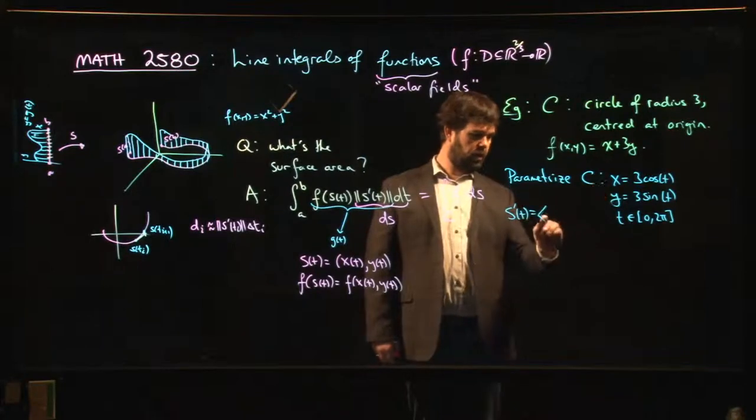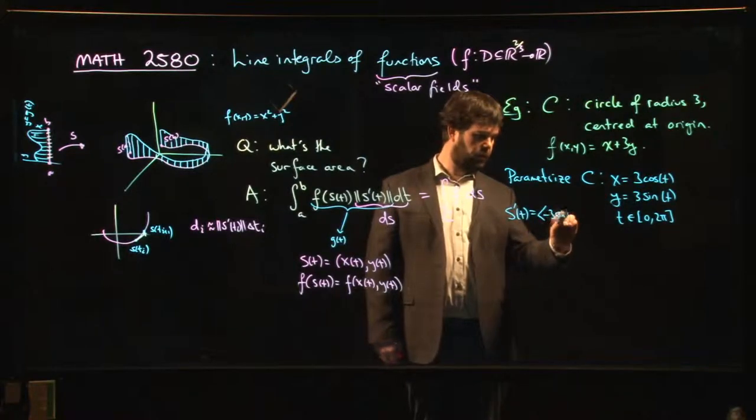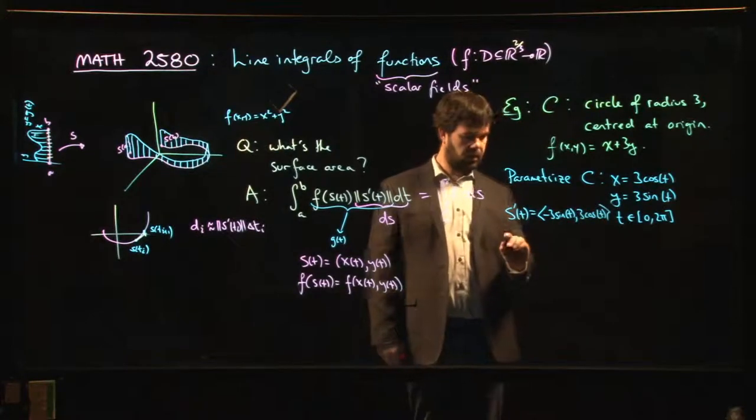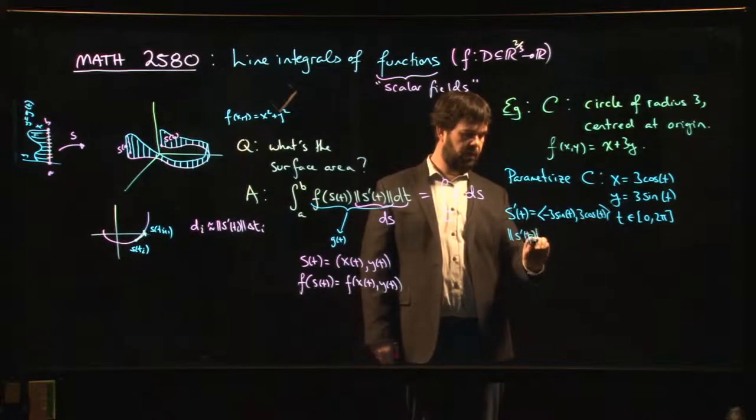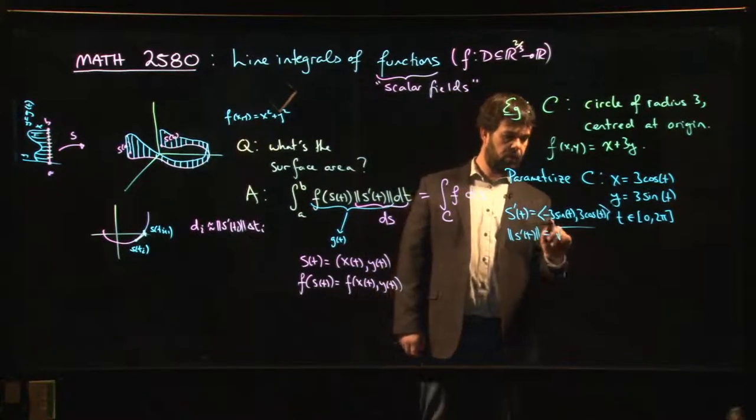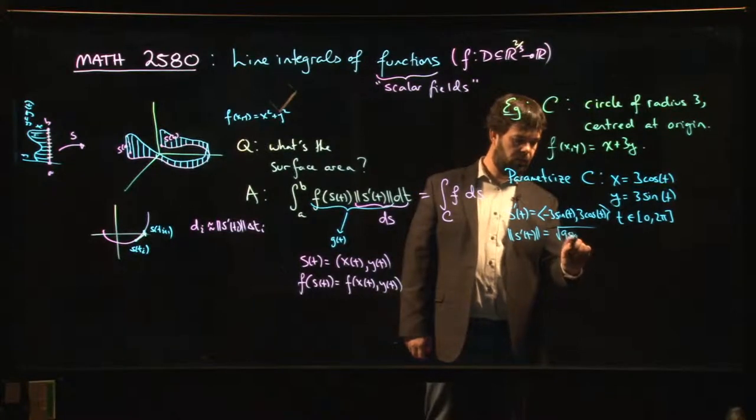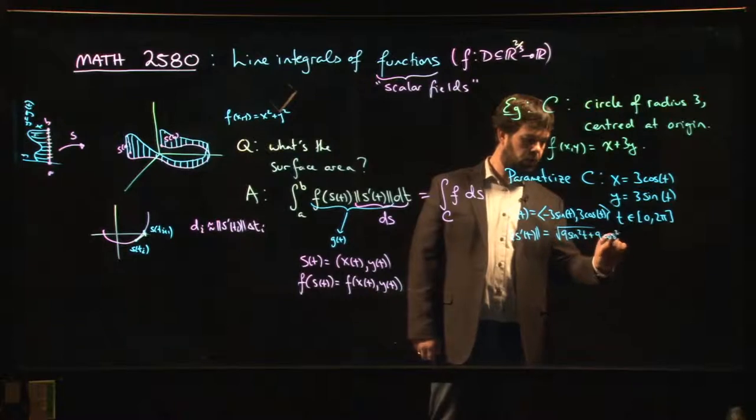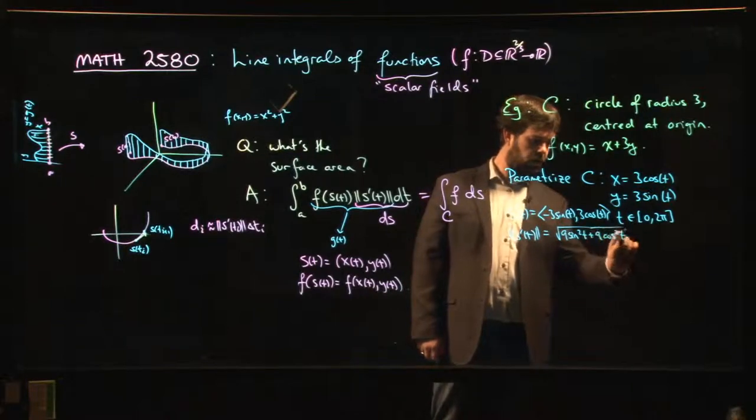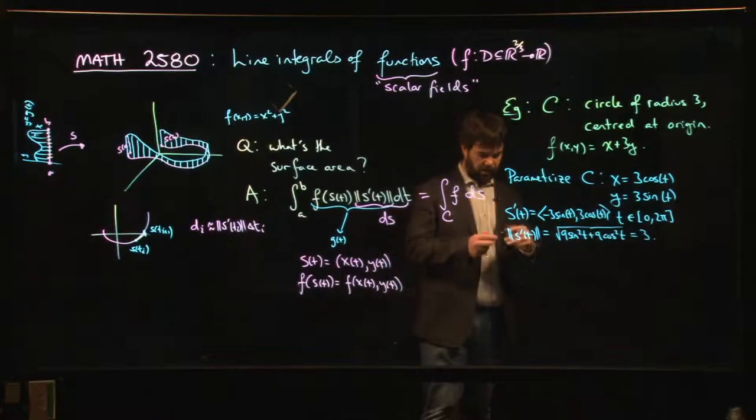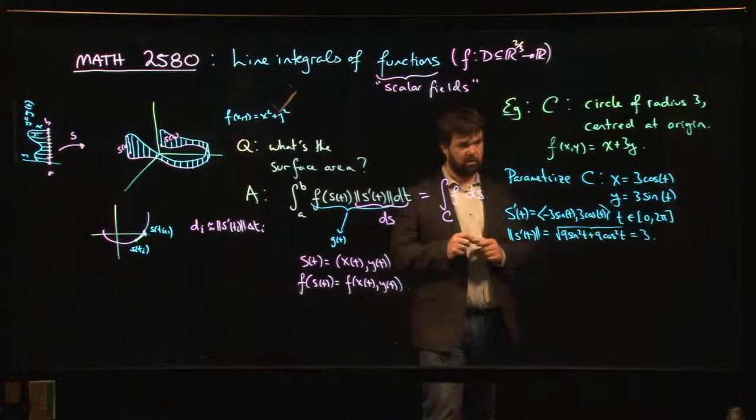s'(t) is going to be (-3sin(t), 3cos(t)). The length of s'(t)—well, we're quite happy about that because the length of s'(t) is going to be the square root of 9sin²(t) + 9cos²(t). The length is simply 3, right? It's constant, which is nice because usually